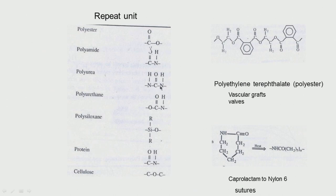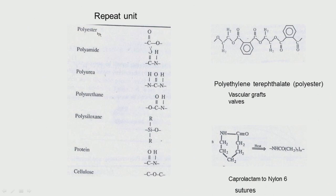Polyurea has C=O flanked by two nitrogen amines. Polyurethanes are very strong, non-degradable polymers with C=O and nitrogen. Polysiloxanes have silicon and oxygen with different pendant groups. Cellulose has C-O-C linkages. These are the repeat units found in some of these polymers — the unit keeps repeating many, many times.